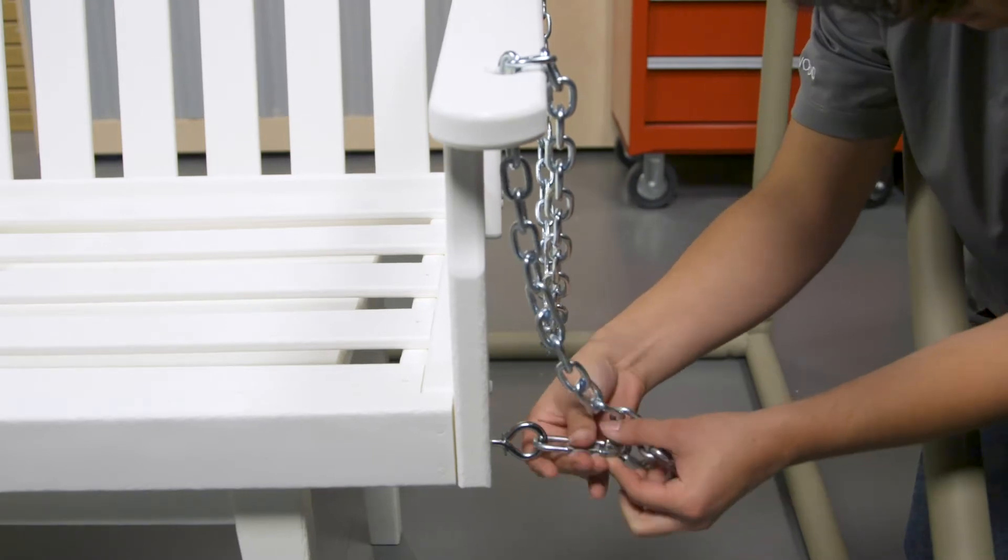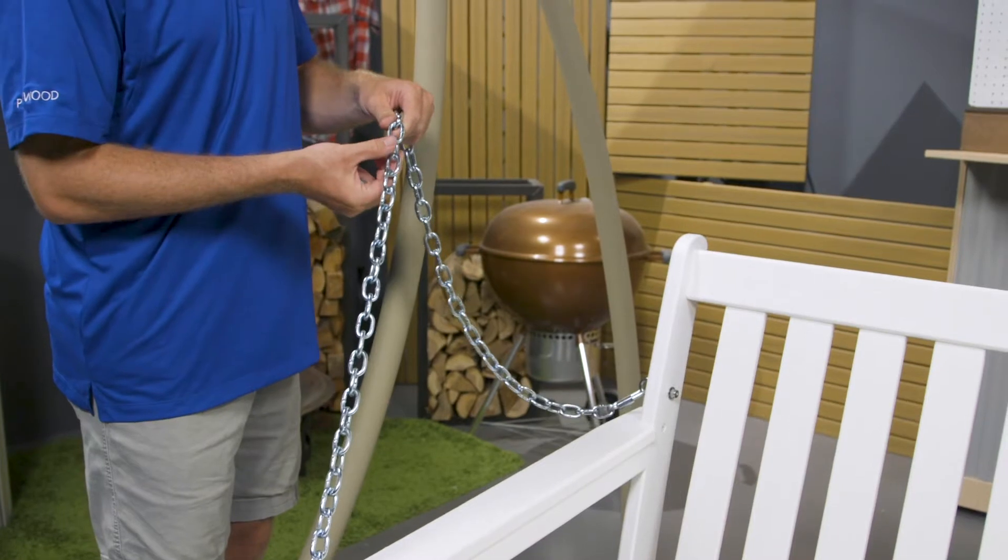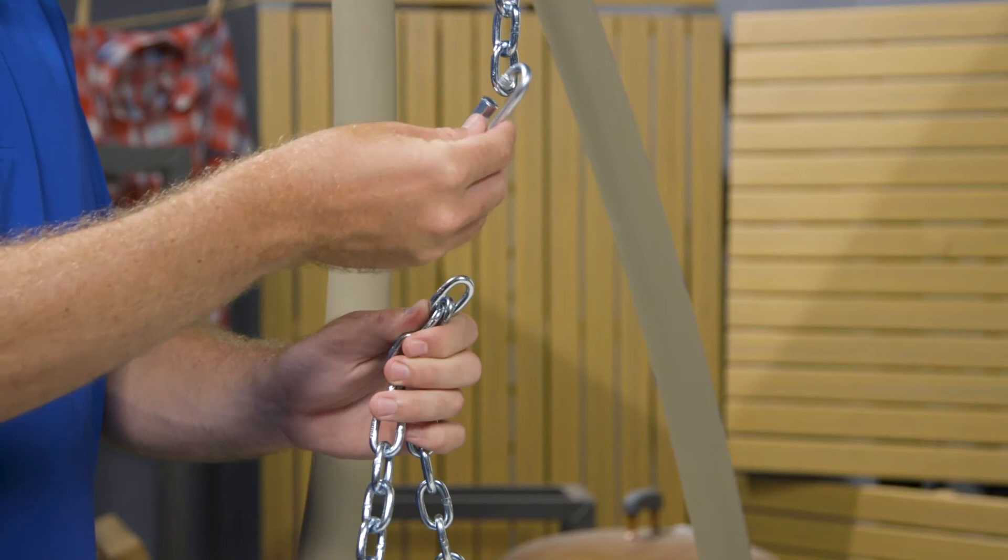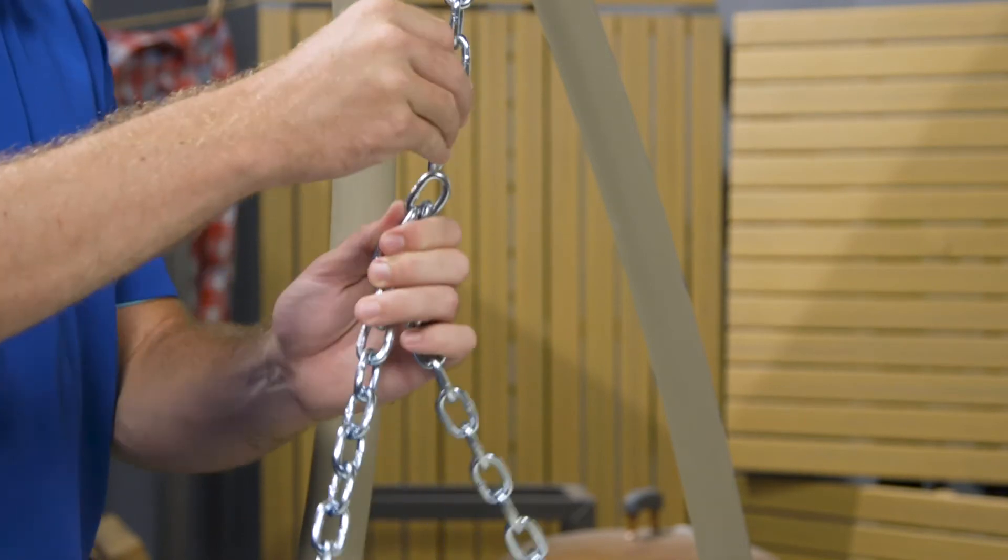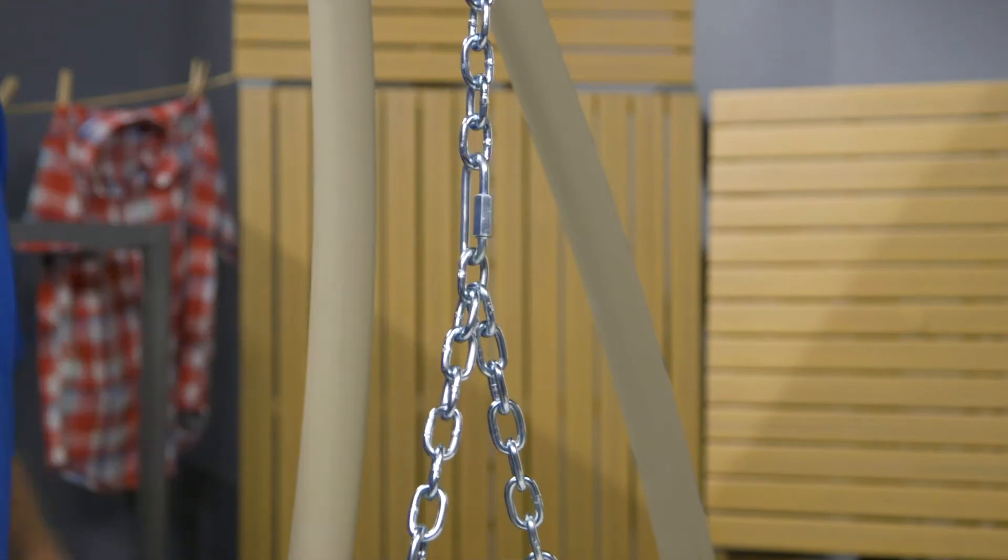The other two chains will be used to suspend the swing from hanging mounts. Please note that the hanging mounts you choose to use should be about 55 inches apart. Use the other two quick links to attach the swing chains to the hanging chains. The swing should be suspended roughly 18 inches off the ground.